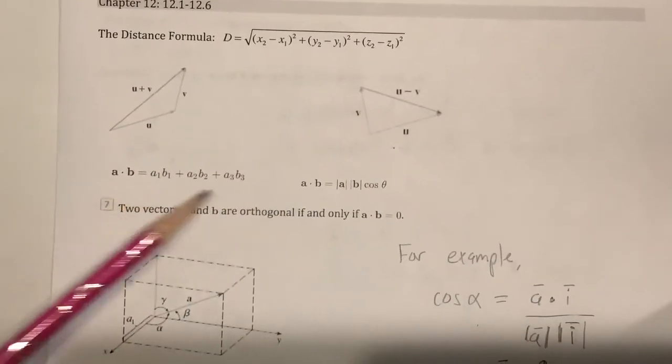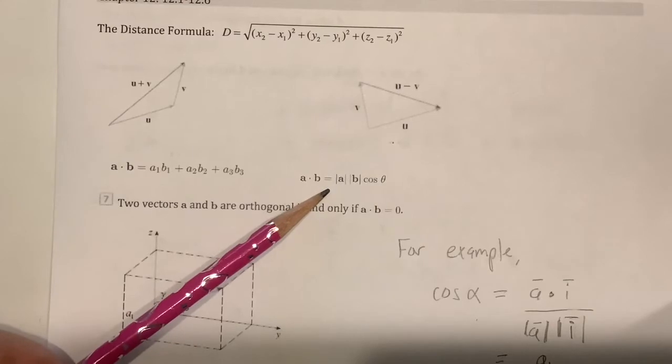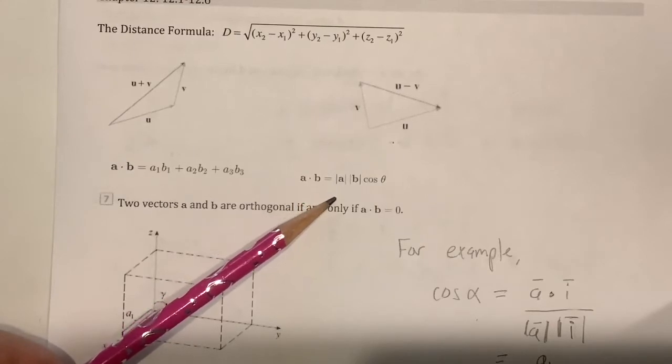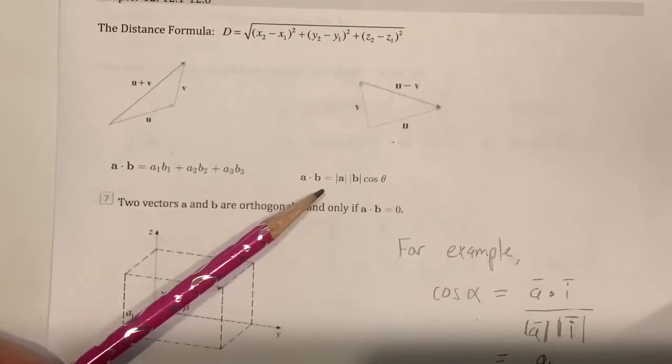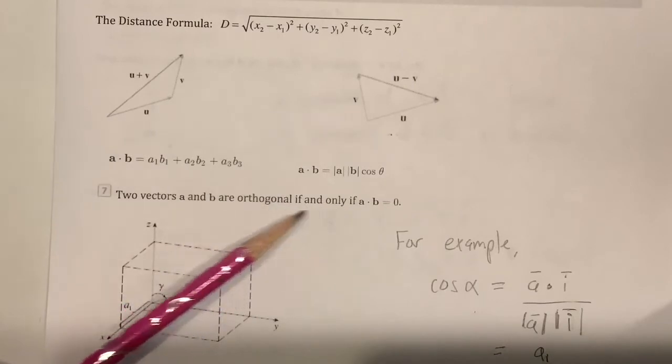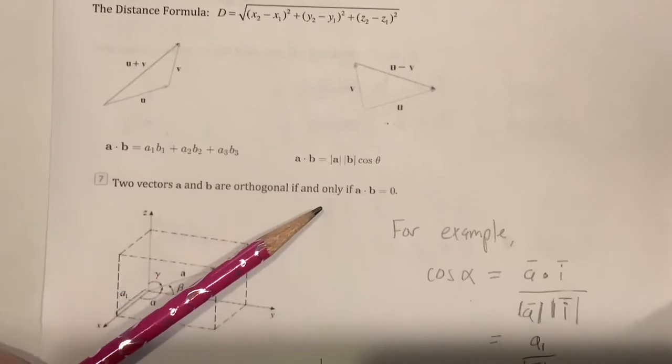We talked about the dot product and the theorem that follows from the dot product. Especially helpful when you're trying to find the angle between two vectors and the dot product is a good way to determine if two vectors are orthogonal, if the dot product is zero.